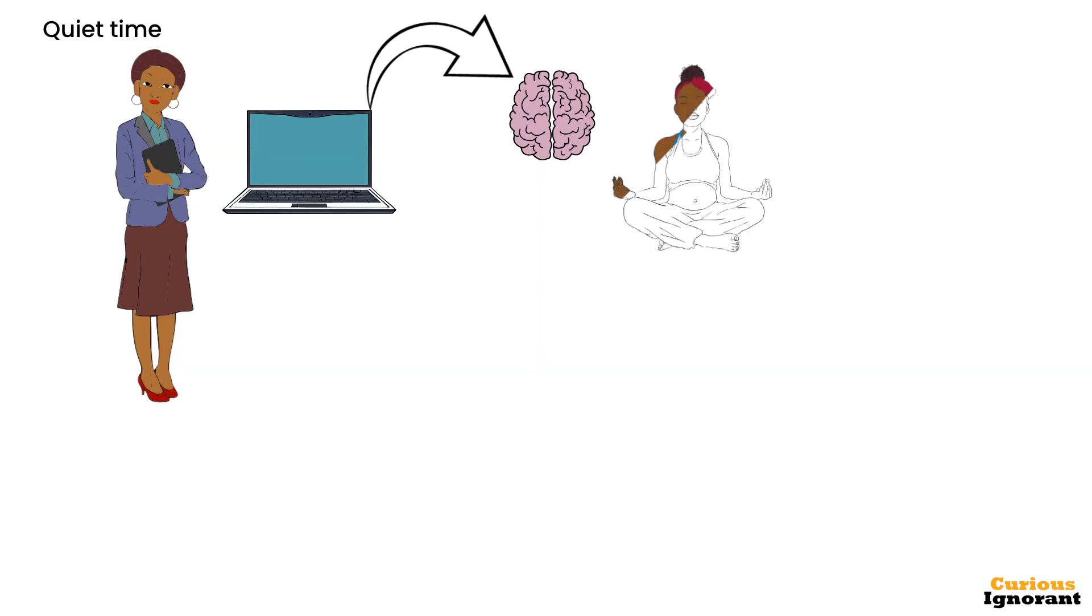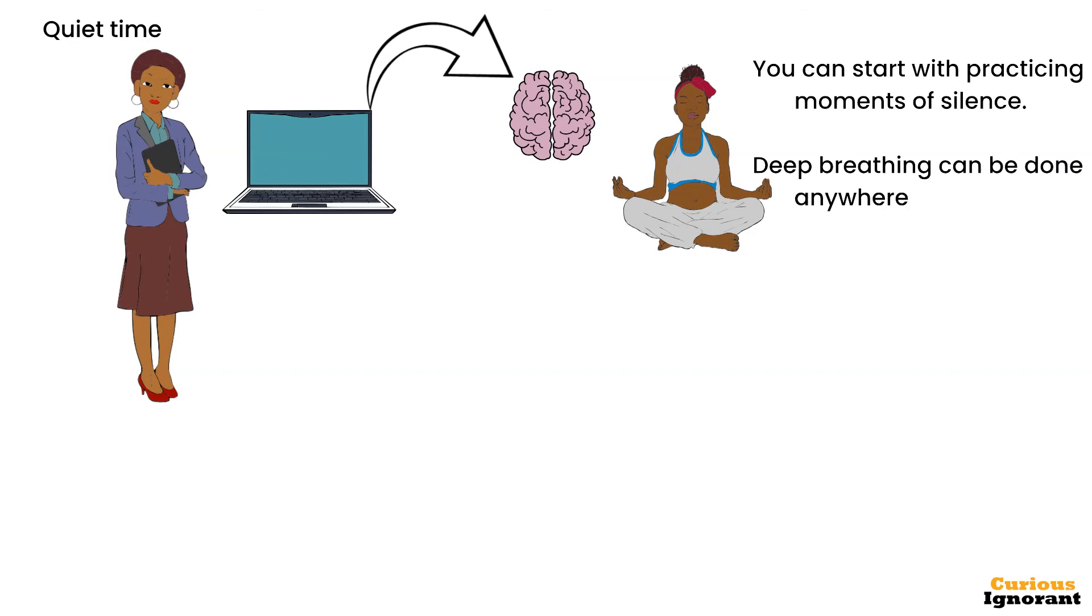Meditation does this for the brain. Before learning meditation, you can do two simple things. One, you can start with practicing moments of silence. Two, deep breathing can be done anywhere, anytime.